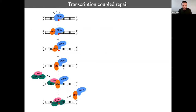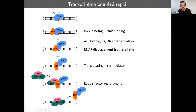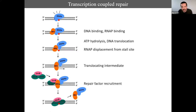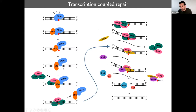At what point might domain opening happen? During transcription-coupled repair, MFD must bind DNA, bind RNA polymerase, perform ITP hydrolysis, couple to DNA translocation, displace the RNA polymerase from the stall site, form a translocating intermediate after the transcription bubble has collapsed and the RNA has gone, and then recruit repair factors.